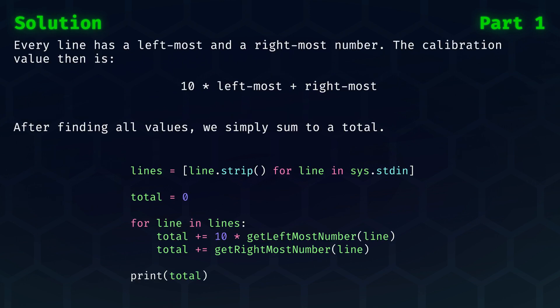From the problem statement, we know that every line has a leftmost and a rightmost number. The calibration value then is simply 10 times the leftmost number plus the rightmost number. After finding all values from all the lines, we simply have to sum them up to a total.